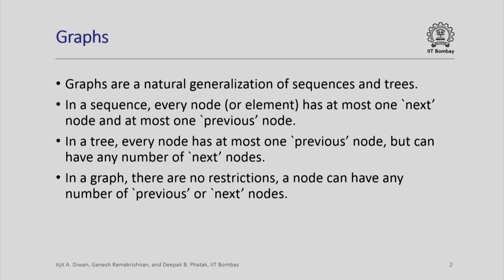A node can have any number of children but it will have at most one parent. A graph is obtained by just relaxing all these conditions — in a graph a node can have any number of previous or next nodes.